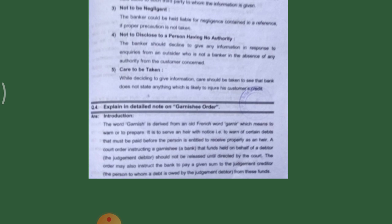The order must instruct the bank to pay a given sum to the judgment creditor — that is, the person to whom a debt is owed by the judgment debtor — from this fund.